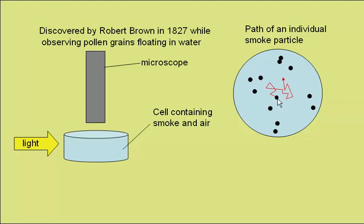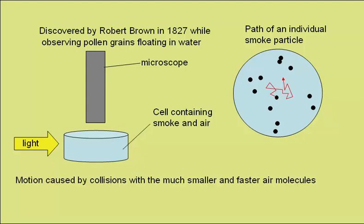You see there are straight lines, followed by angular changes in direction. The motion is caused by collisions with the much smaller but faster air molecules. So a smoke particle will move in its current direction until it's hit by a smaller, faster air particle, where it will change direction until it has another collision, and so on.